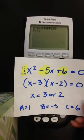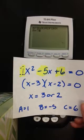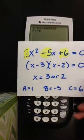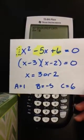And so in this case, A is 1, B is negative 5, and C is 6. So let's enter those into our calculator.